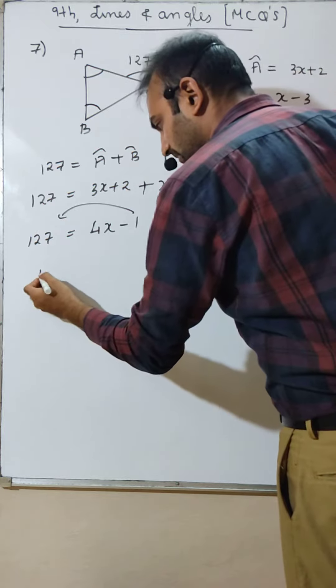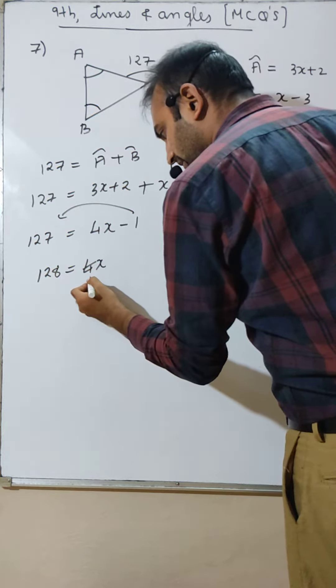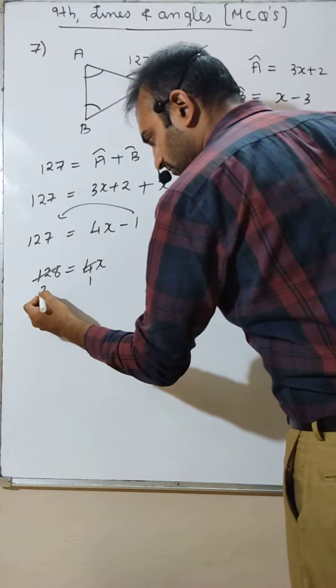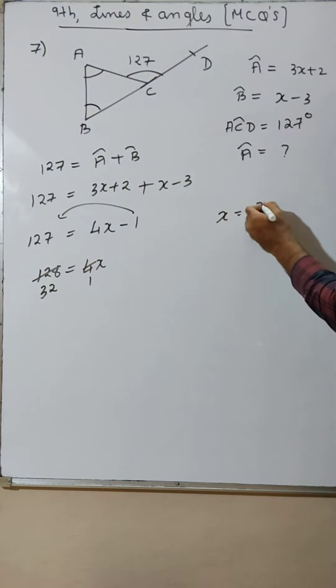Plus 1, so 1 is 128. 4x is 128, so x equals 32.